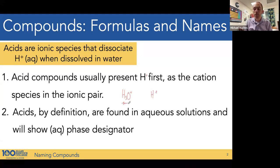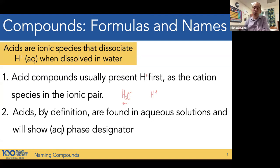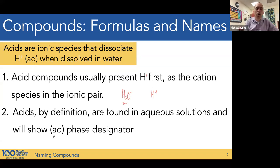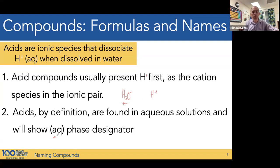It's transported through the solvent as hydronium. Acids by definition have to be in aqueous solutions to transport that hydronium, so they will always show aqueous as a phase designator. So H+ as the cation and aqueous indicate that it's an acid.